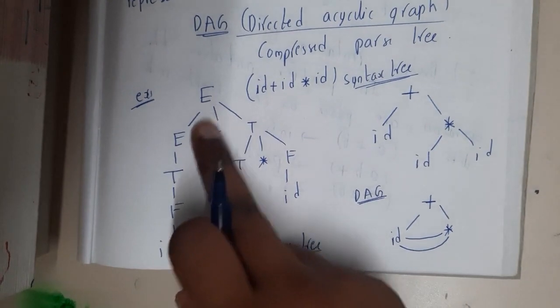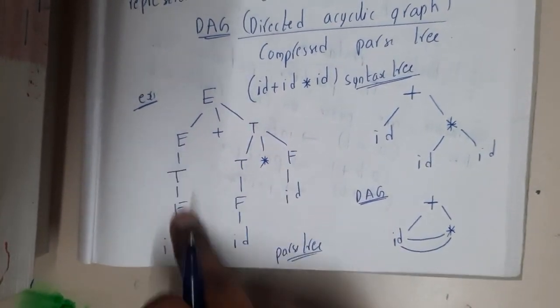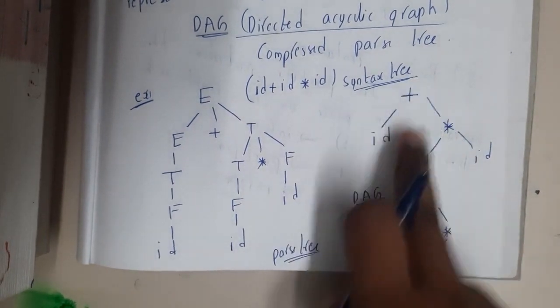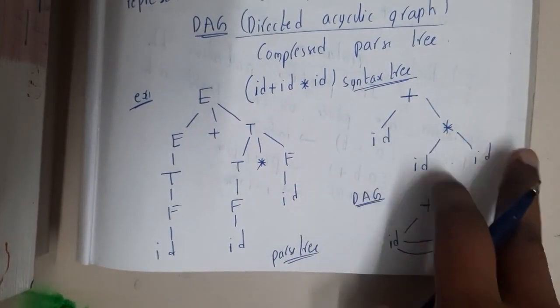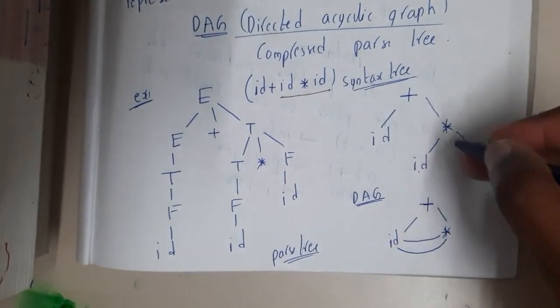Assume that the parse tree will be looking in this way, so E implies E plus T and T implies T into E, and it will be extending in this way. Whereas the syntax tree will be in this way, showing only the operations. Here, id into id will be having high precedence, so that is calculated first and then this result will be calculated.